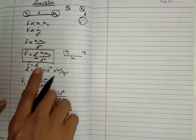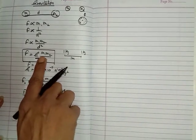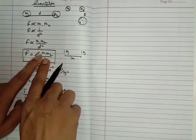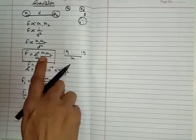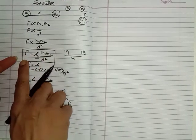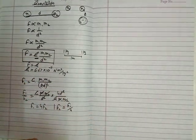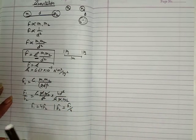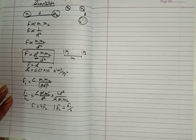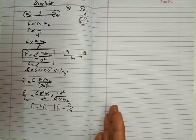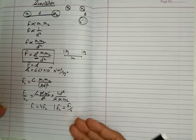If we double the mass of one of the objects, then the force will also become double. If we double both the masses, the force will become 4 times. So the force of attraction between objects depends on the mass of the objects and the distance between them. There are some numericals based on this formula.